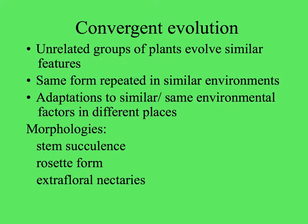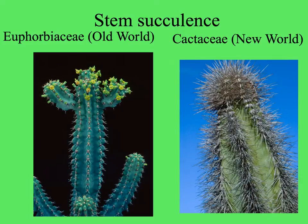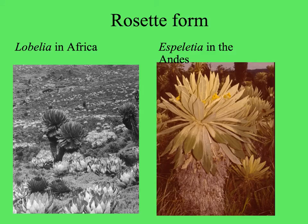This topic is also a good place to talk about convergent evolution, where unrelated groups of plants end up looking the same — the same adaptations of form repeated in similar environments in different parts of the world. These can be extreme morphologies like stem succulents, rosette growth form, and even extrafloral nectaries. In the Old World there are no cacti, but there are plants that look like cacti in the Euphorbiaceae. In the New World that's where we find the Cactaceae, with leaves reduced to spines and succulents in the stem. The rosette form can be seen in the Lobeliaceae in Africa and in Espeletia, in the Asteraceae, in the Andes.